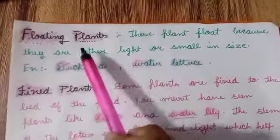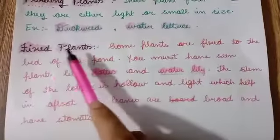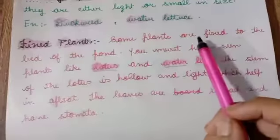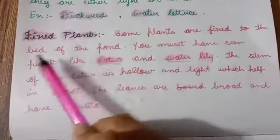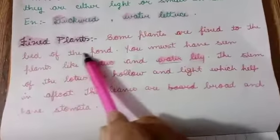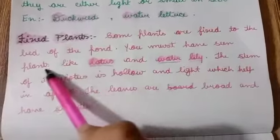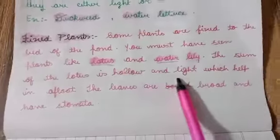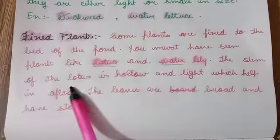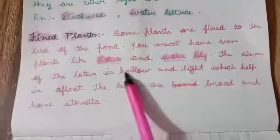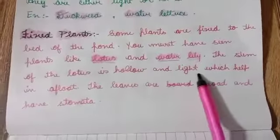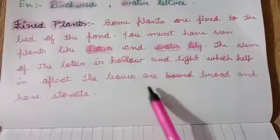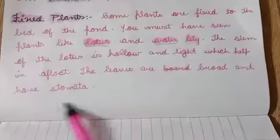Now we will study about the fixed plants. What are the fixed plants? Some plants are fixed to the bed of the pond. You must have seen plants like the lotus and the water leaf. Lotus and water leaf are fixed plants. The stems of the lotus are hollow and light, which helps in keeping it afloat. The leaves are broad at the end and have stomata.